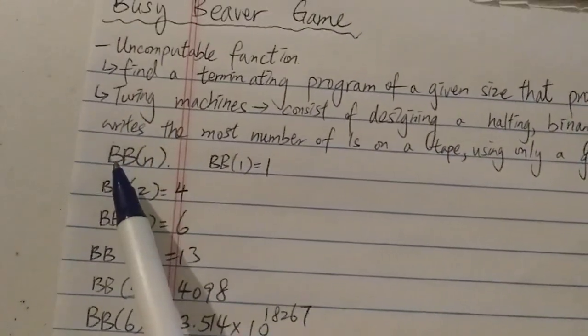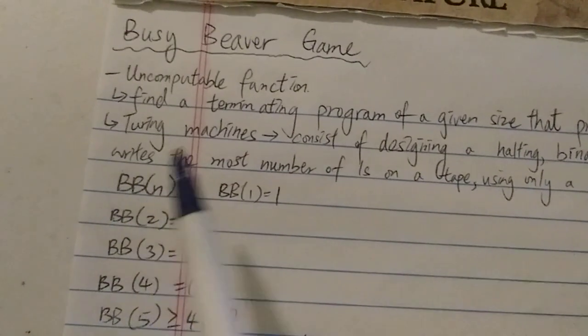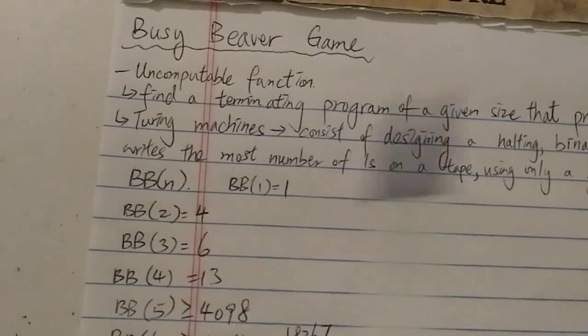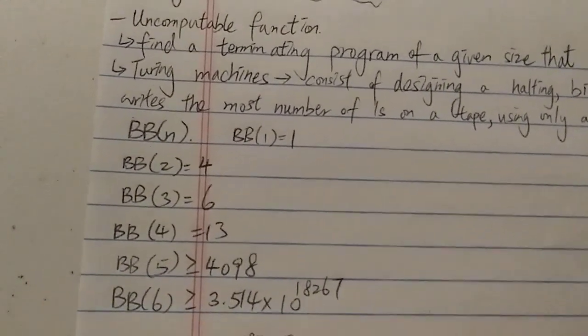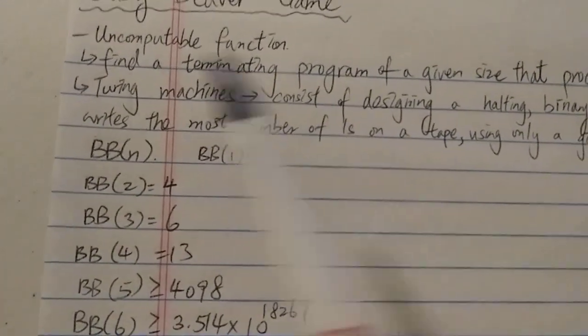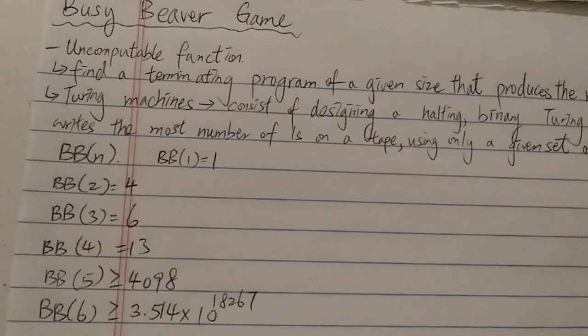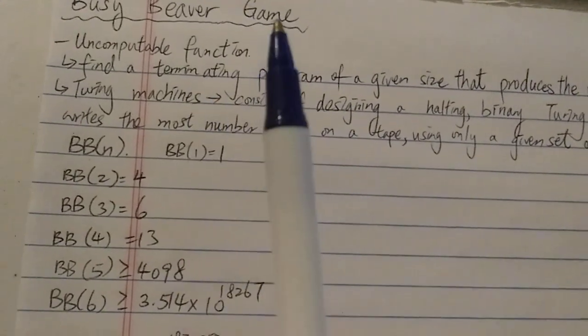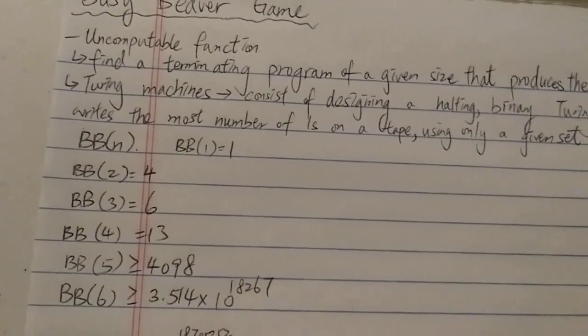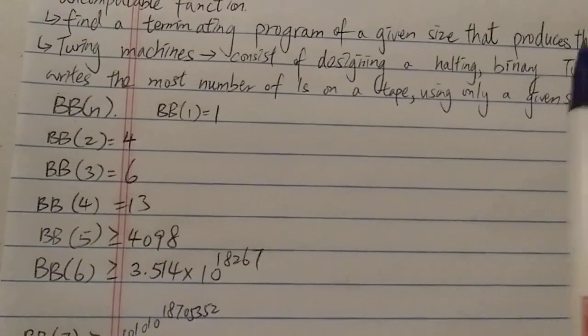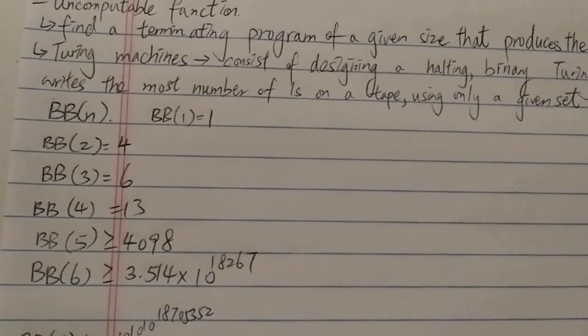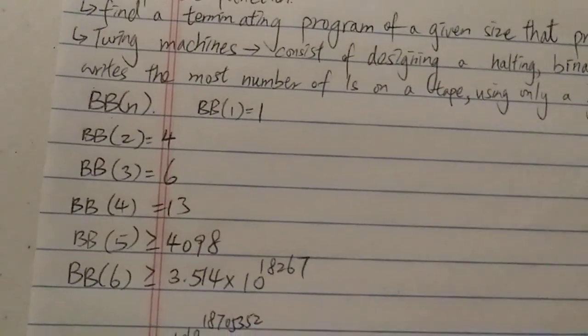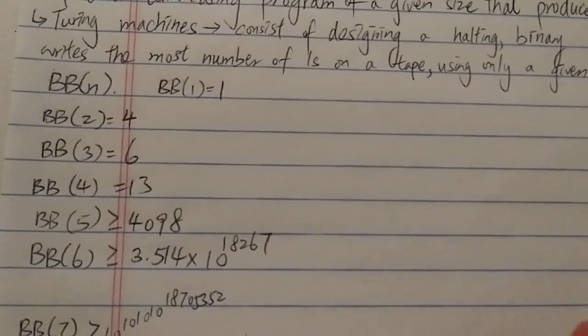The busy beaver game is written as BB(n). You have an infinite tape which is infinitely long, and they are all zeros - we start with all zeros in this infinite tape. Using a Turing machine, you're given a set of instructions and n number of states, where n stands for the number of states, and you're trying to write the most number of ones.